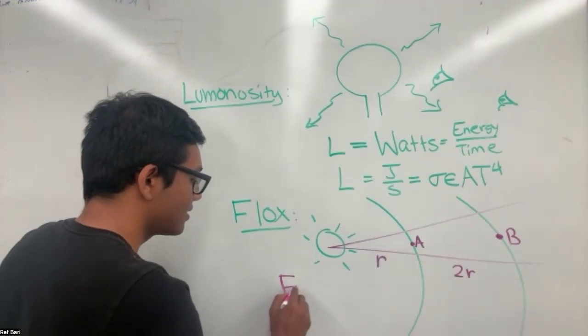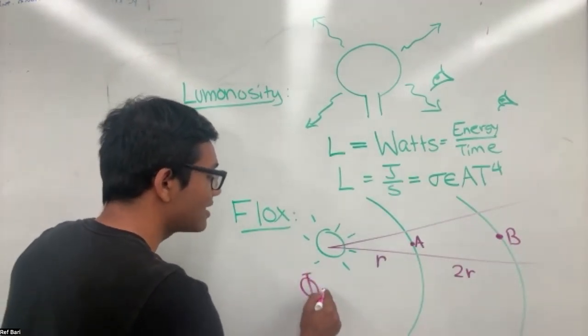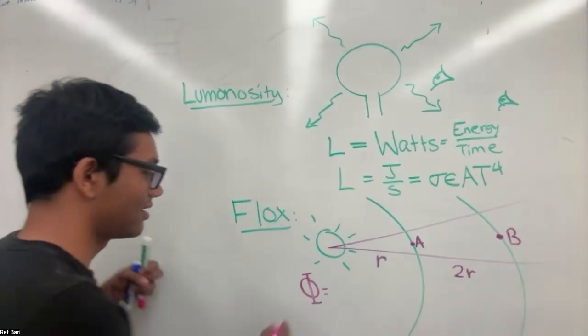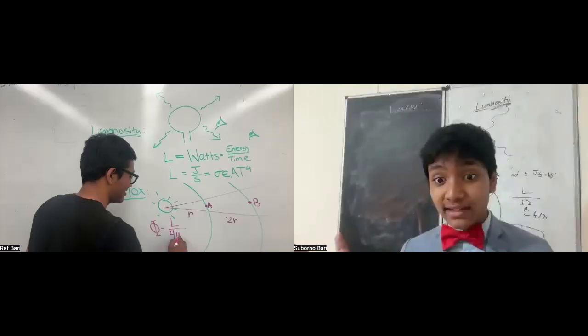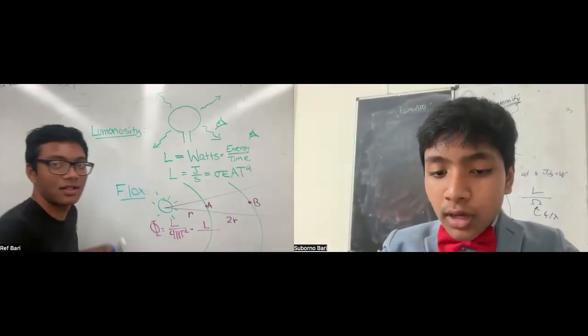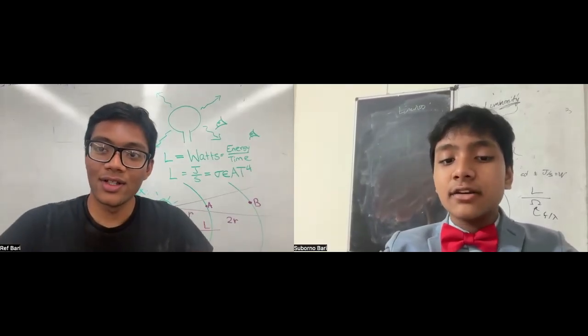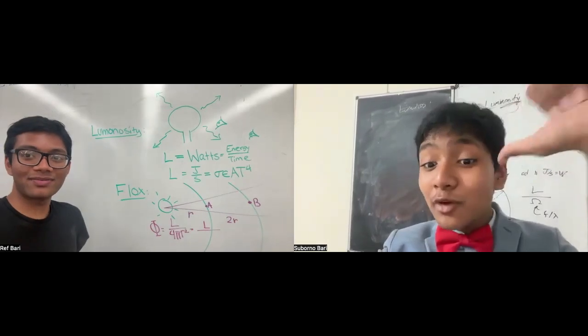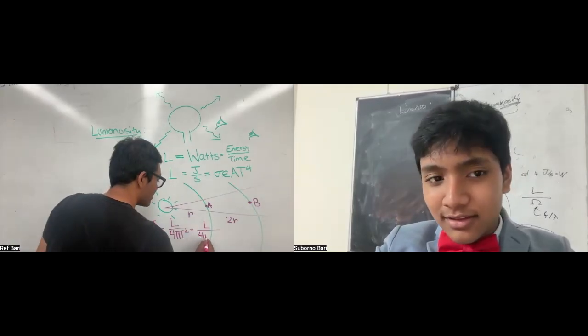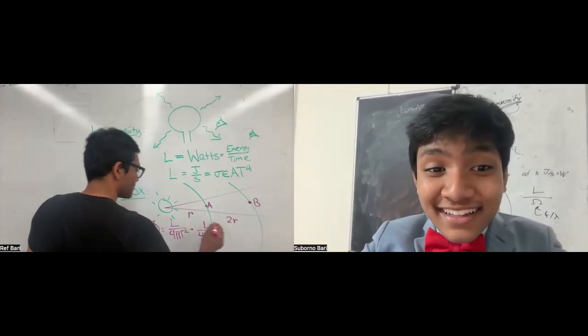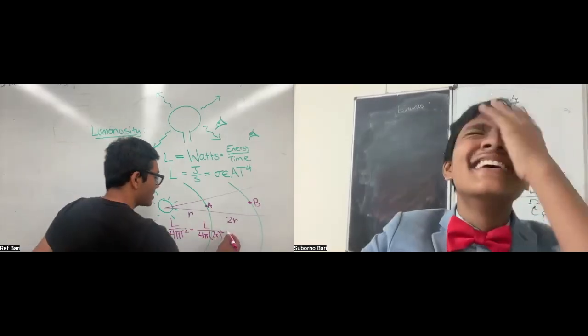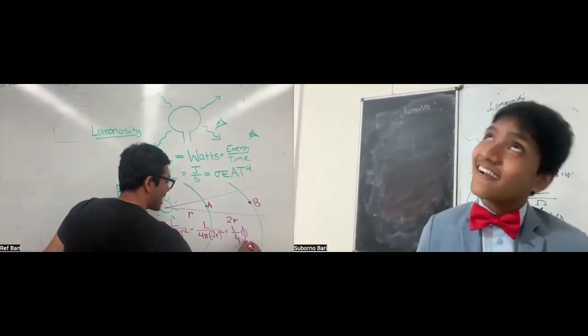Why? Because the flux... Oh, that's where the four pi come from. No, that's not where it comes from. Yeah, that's where the four comes from. No, the derivation of a sphere surface area does not have anything to do with that. The four comes from integration. The four comes from the surface area of a sphere, which comes from integration. If I plug in 2R over here, you can see the flux will be one-fourth of the flux at point A.